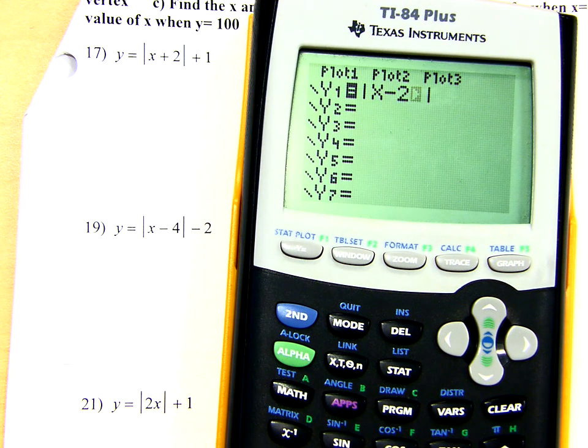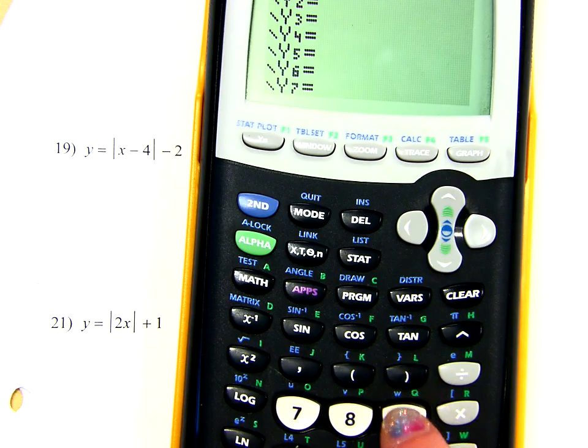X plus 2. So if you have a black calculator, after you type in X plus 2, you want to close the parentheses. So it's the button above the number 9.